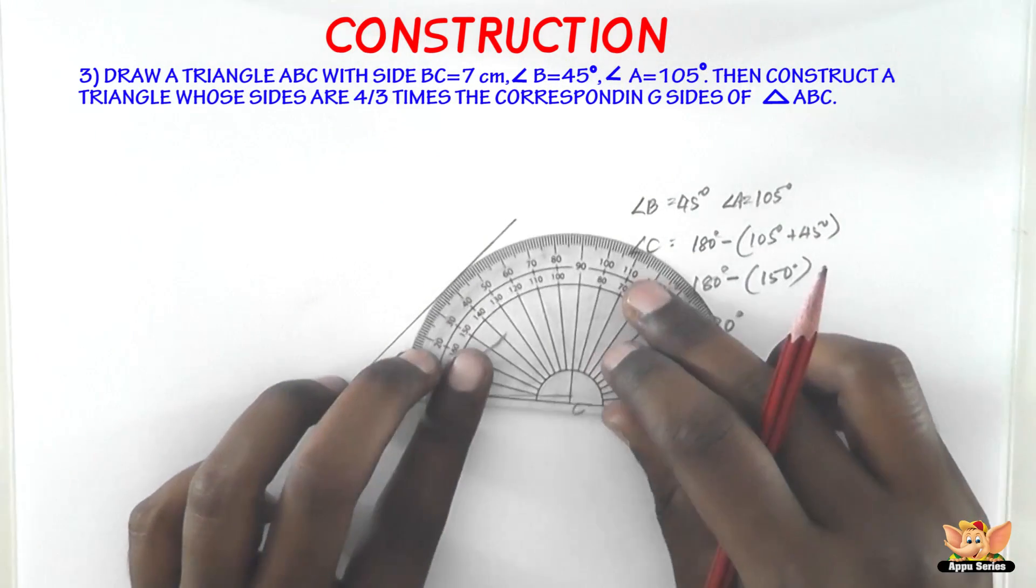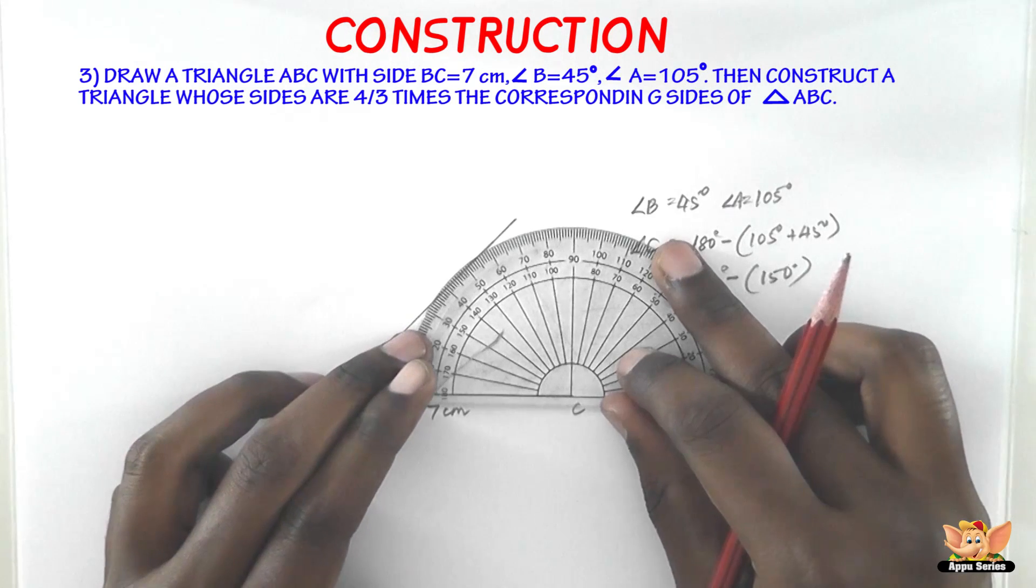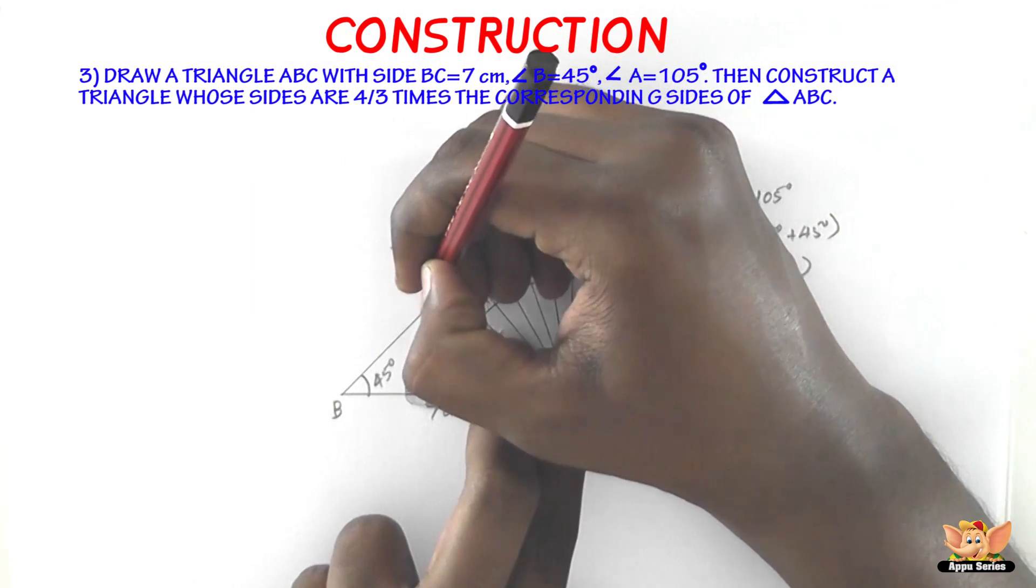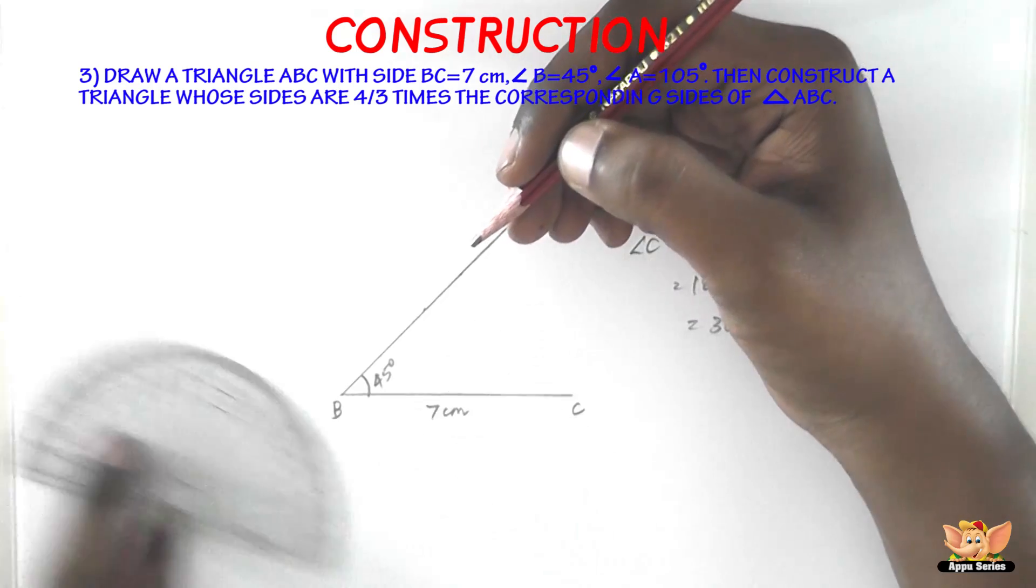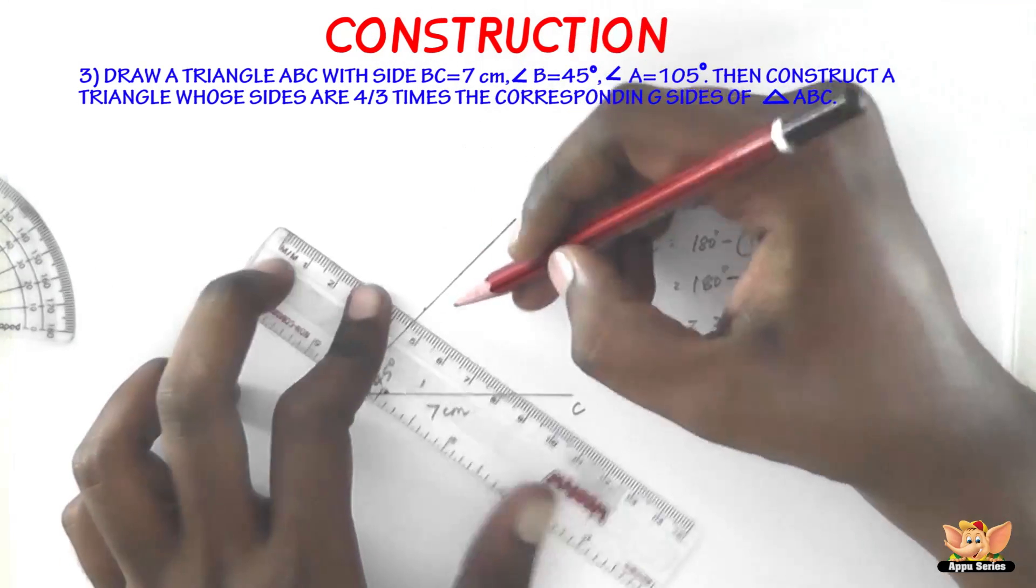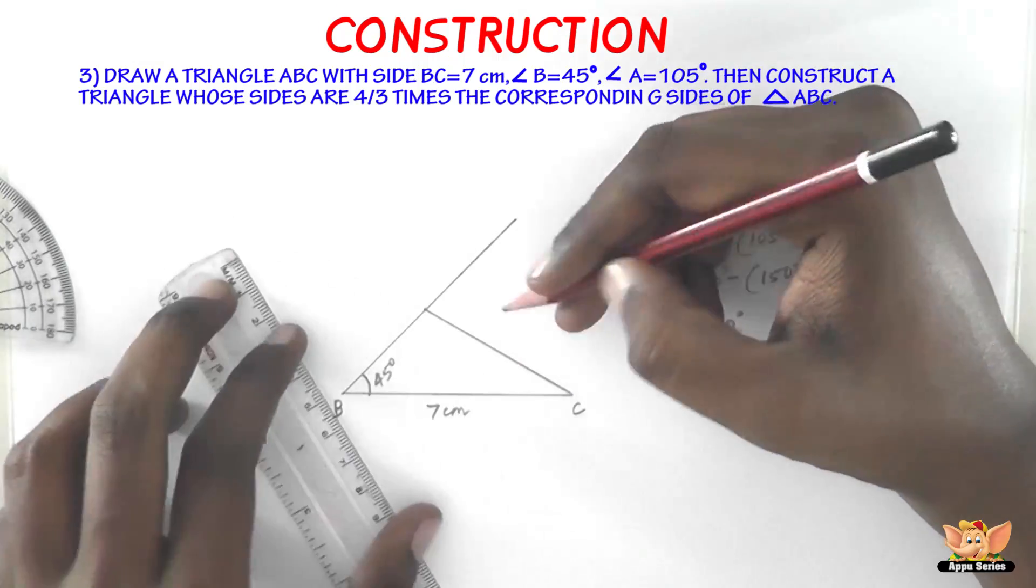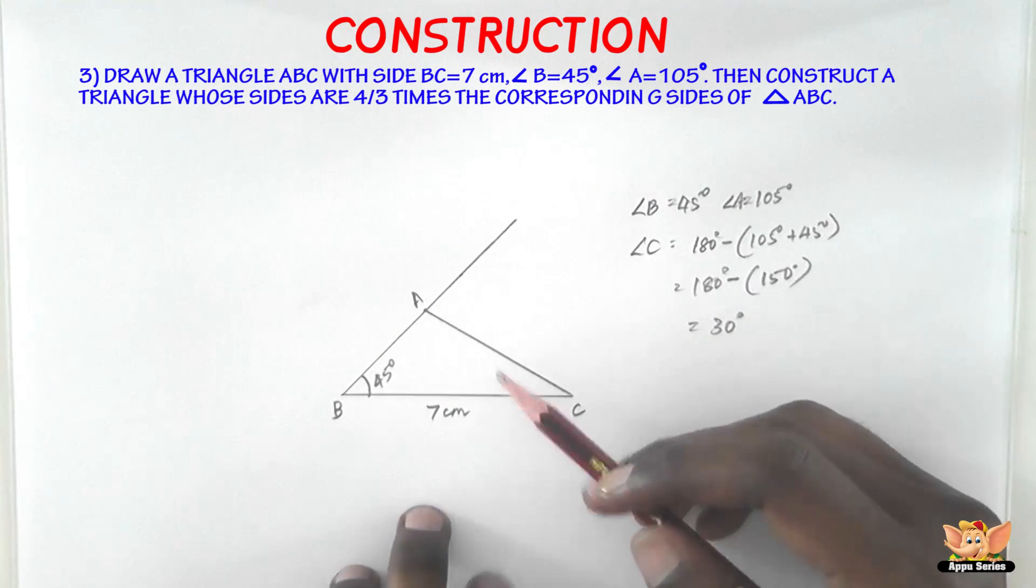So let's use a protractor. Keep the protractor at point C as accurately as possible. And 30 degrees comes here. So we just have to join this and this is the point A. So we've drawn the triangle ABC.